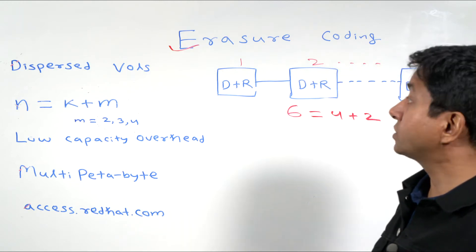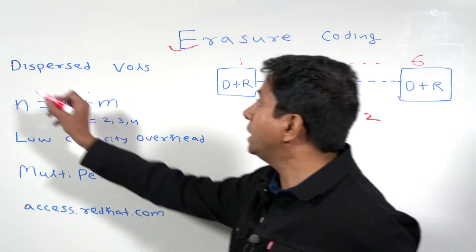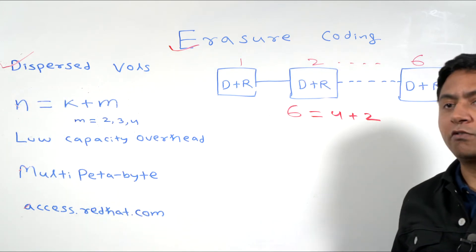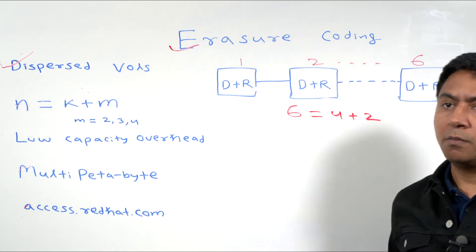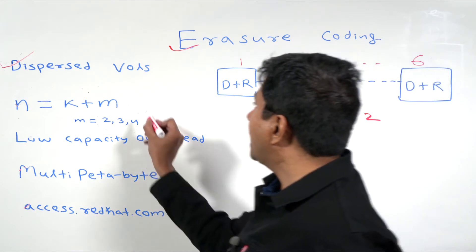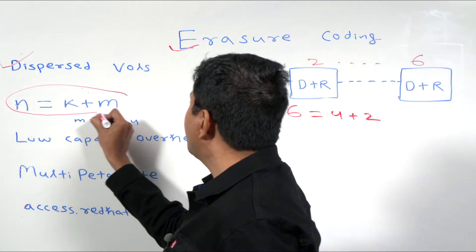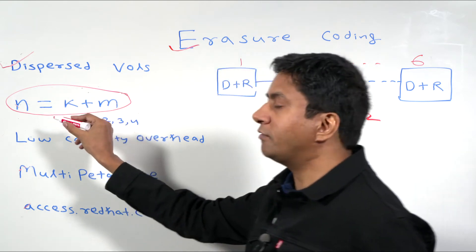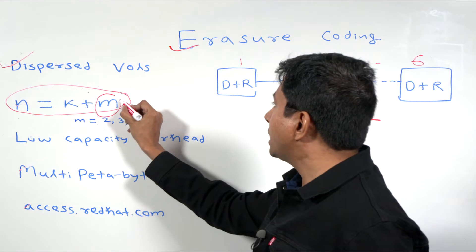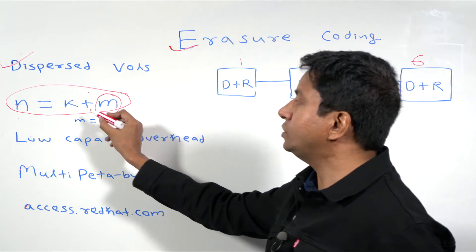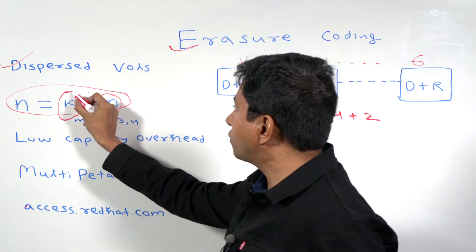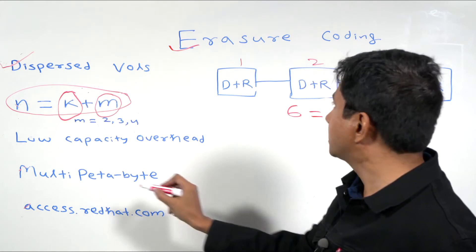Gluster has implemented erasure coding in the form of dispersed volumes, which makes use of the Reed-Solomon algorithm with non-systematic erasure coding. In an n equals k plus m configuration, let's say you have n number of bricks — up to m bricks can go down and you can still reconstruct the data from the surviving k bricks.